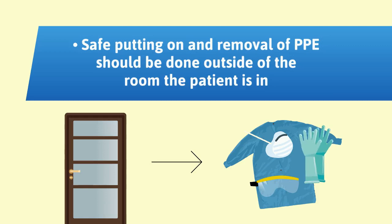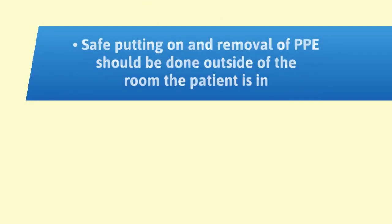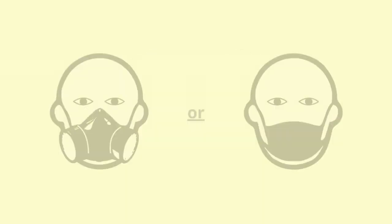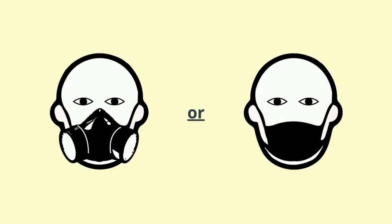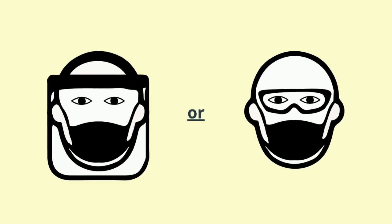PPE should be put on either using a mirror or under the supervision of a trained colleague. The recommended PPE set includes: a long-sleeve fluid-resistant surgical gown — if not fluid resistant, an apron should be worn over it; disposable medical gloves; a medical mask or a respiratory mask for any aerosol-generating procedure; and eye protection such as a face shield or goggles.